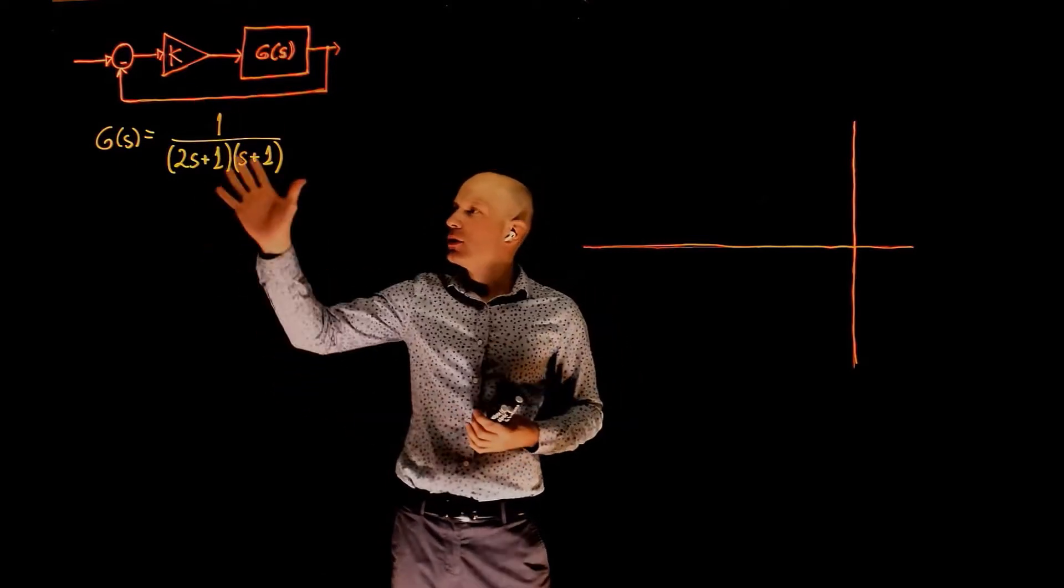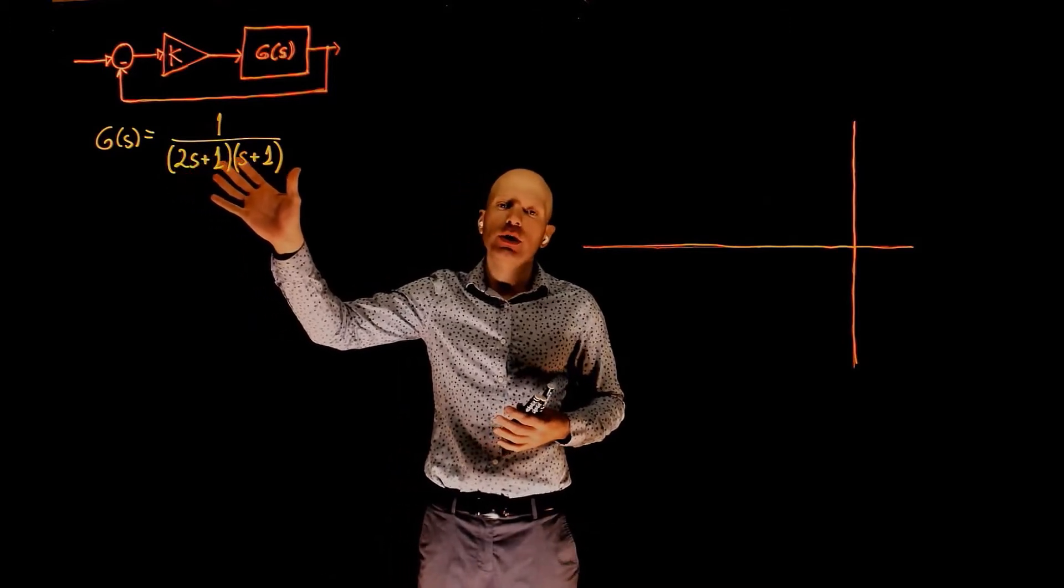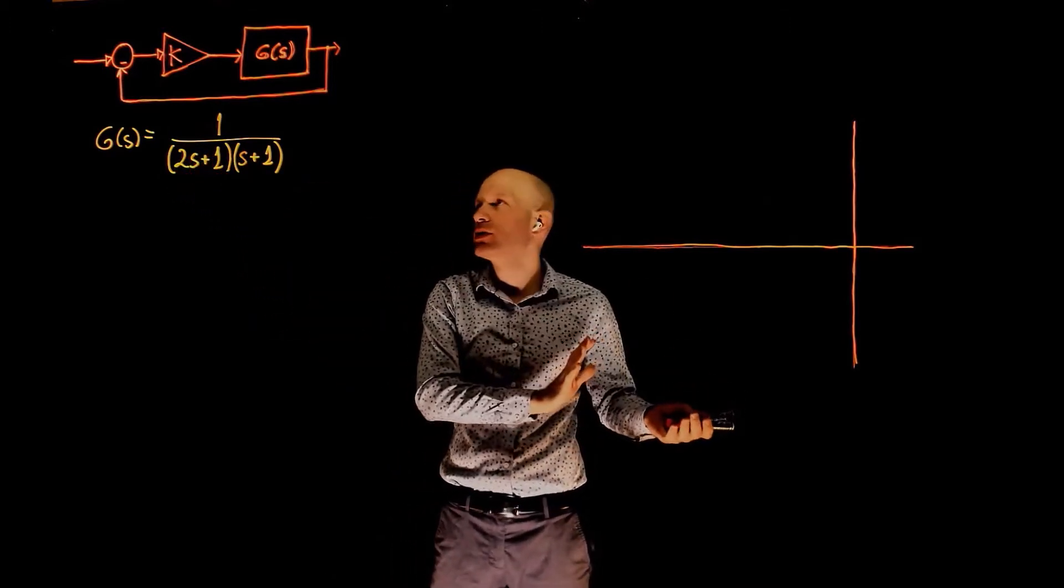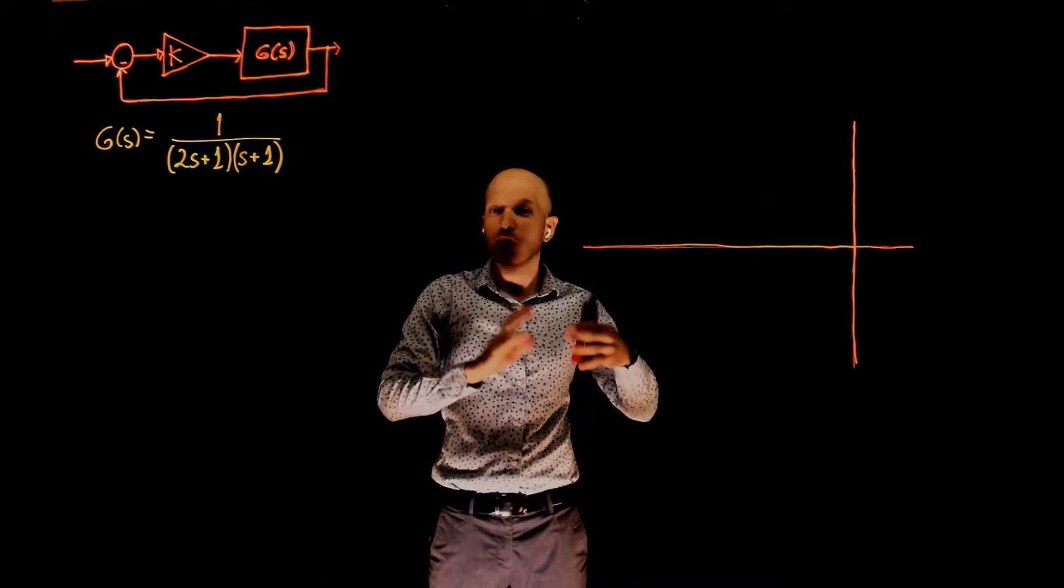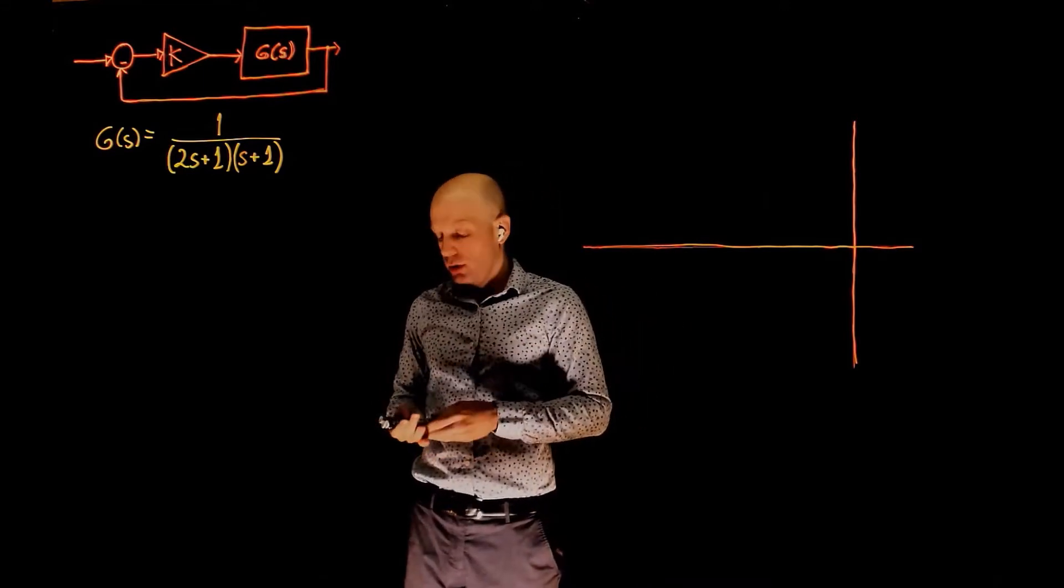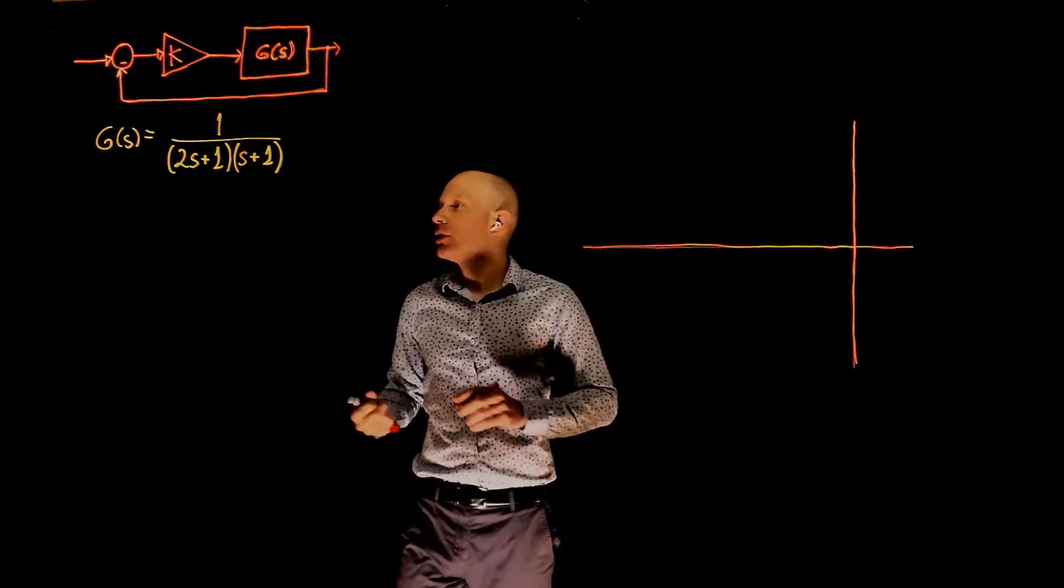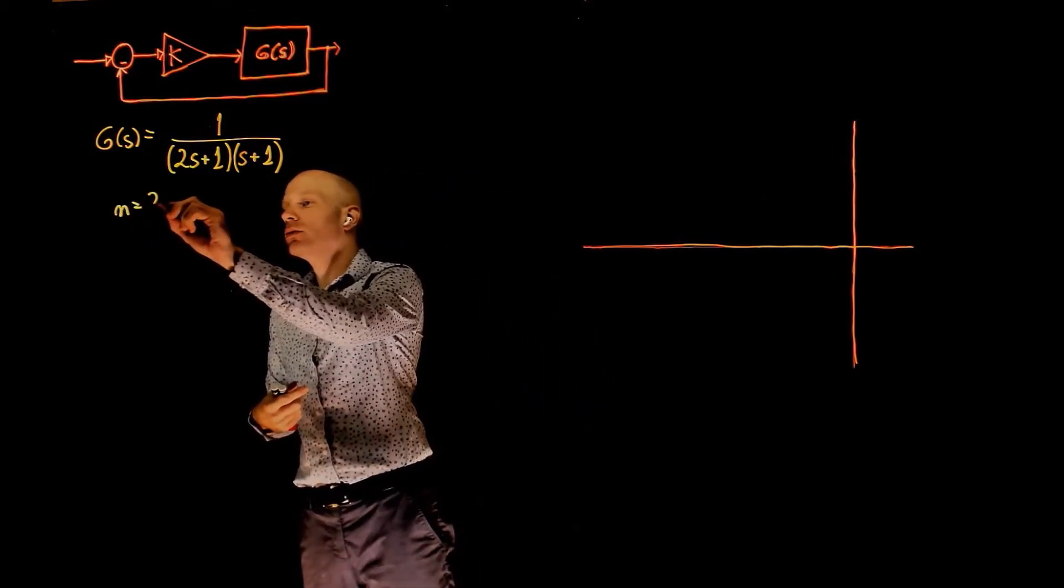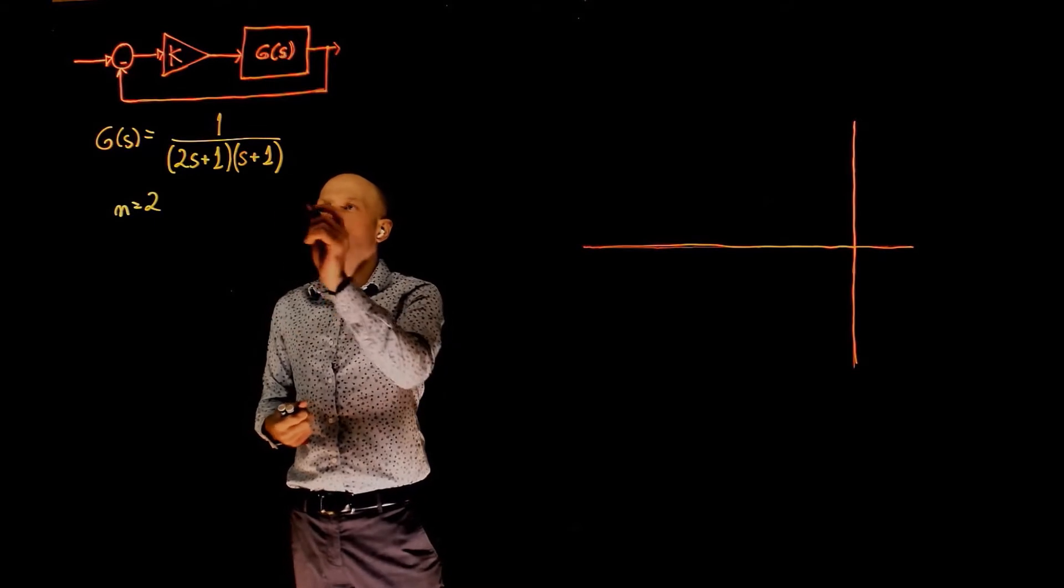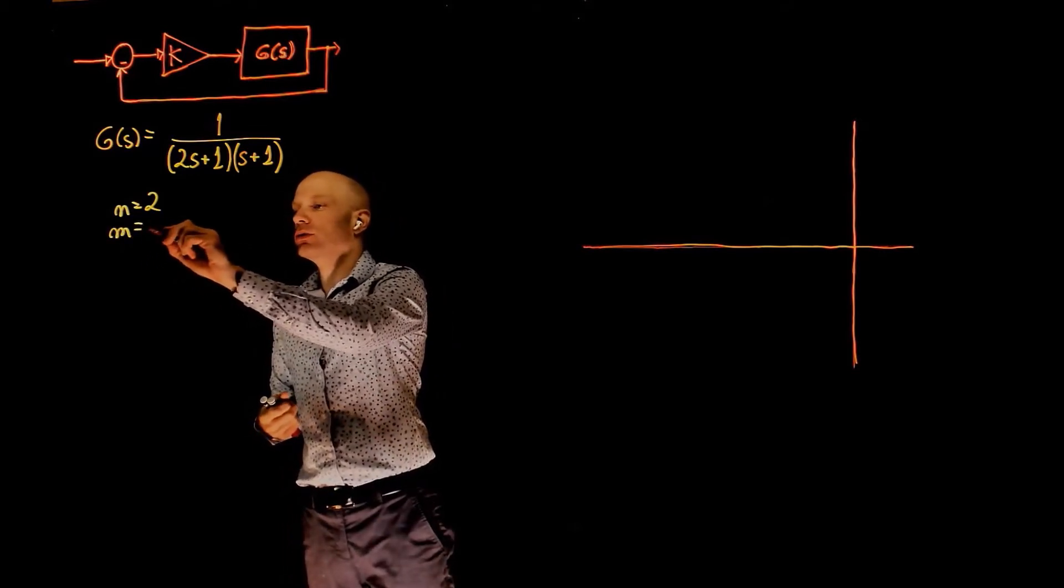We can base this analysis on the open loop transfer function and the root locus will represent the location of the poles for the closed loop system. In this case we have two poles, n equals 2, and we have no zeros, m equals 0.